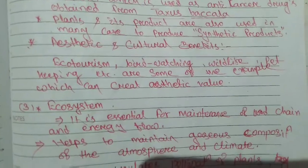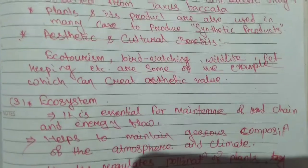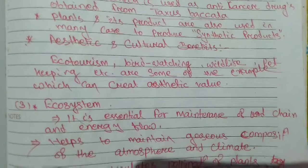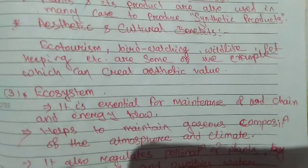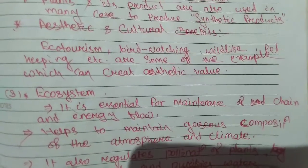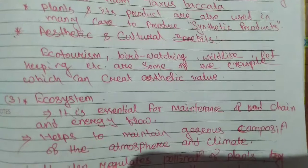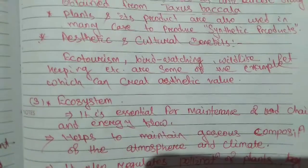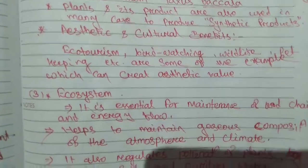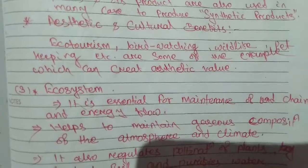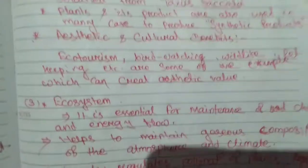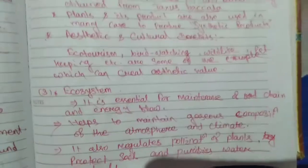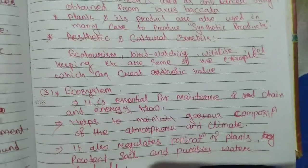Then there are aesthetic and cultural benefits. Aesthetic means beauty. The beauty benefit includes ecotourism, bird watching, wildlife, and pet keeping, which are examples that create aesthetic value. This means that nature and beauty can help communities.